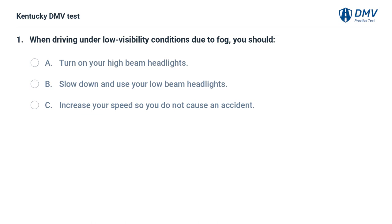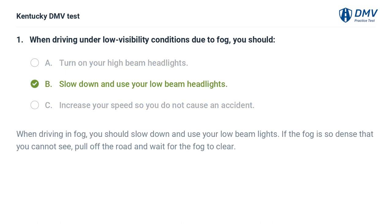When driving under low visibility conditions due to fog, you should: A. Turn on your high beam headlights. B. Slow down and use your low beam headlights. C. Increase your speed so you do not cause an accident. The correct answer is B. When driving in fog, you should slow down and use your low beam lights. If the fog is so dense that you cannot see, pull off the road and wait for the fog to clear.